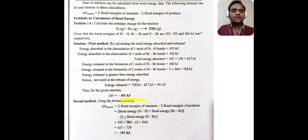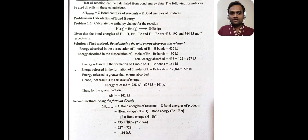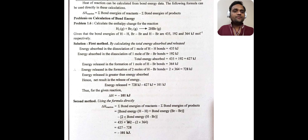Second method: by using the formula directly. Delta H reaction equals summation of bond energies of reactants minus summation of bond energies of products. By putting in the given values, we arrive at the same answer: minus 101 kJ.